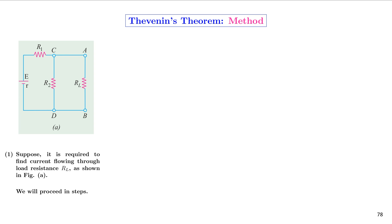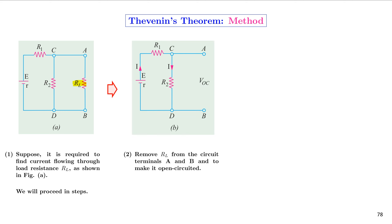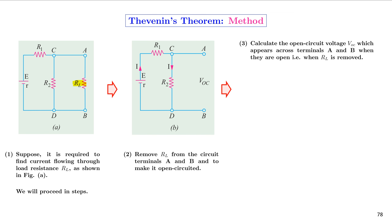Suppose we need to find the current flowing through the load resistor RL. The resistor connected between nodes A and B is the load resistor. The first step in solving an electrical network using Thevenin's theorem is to remove the load resistor RL from the circuit. Now the output terminals A and B are open-circuited.